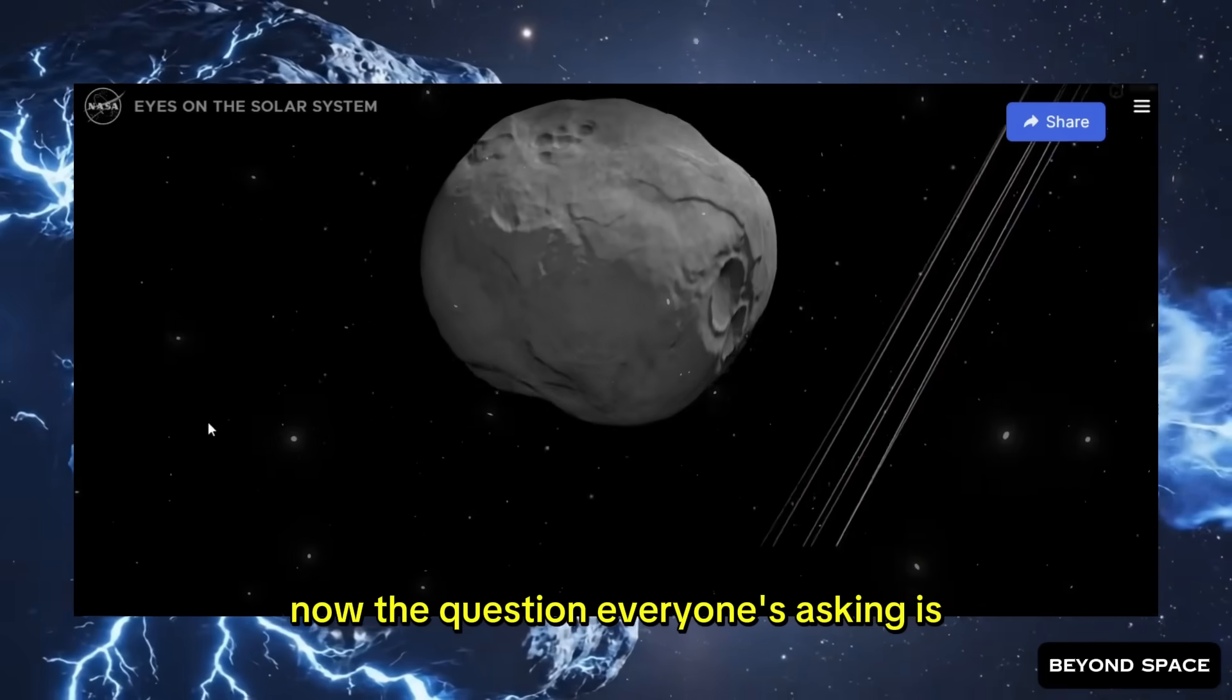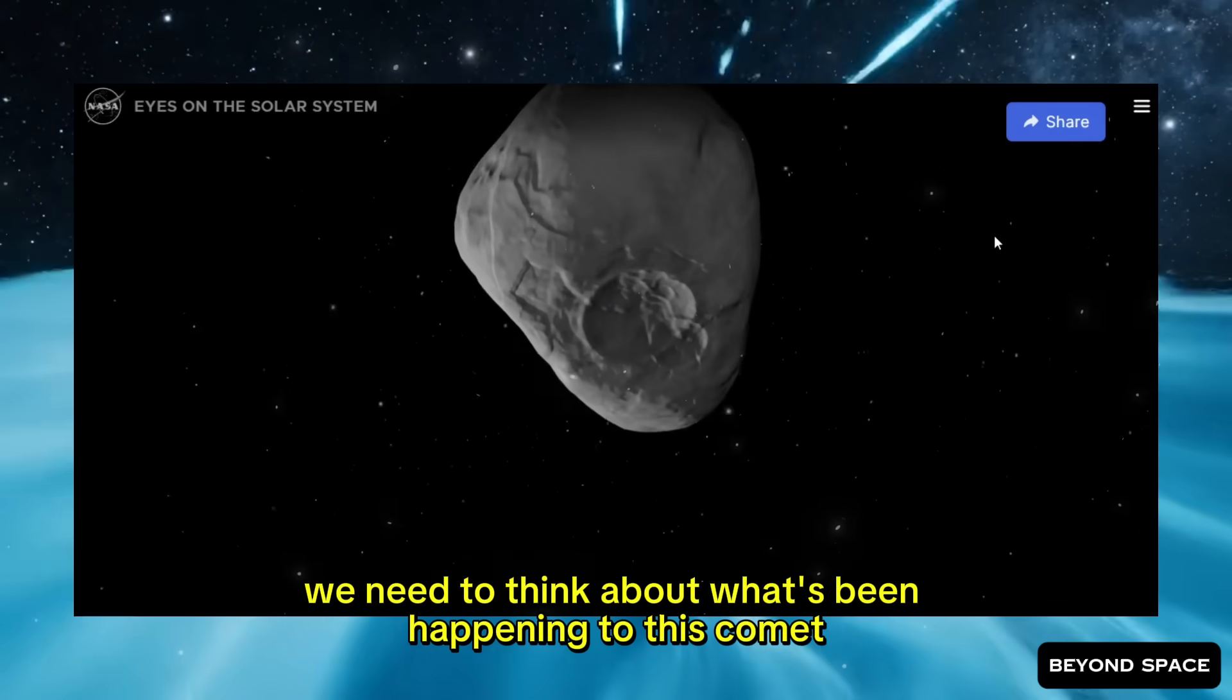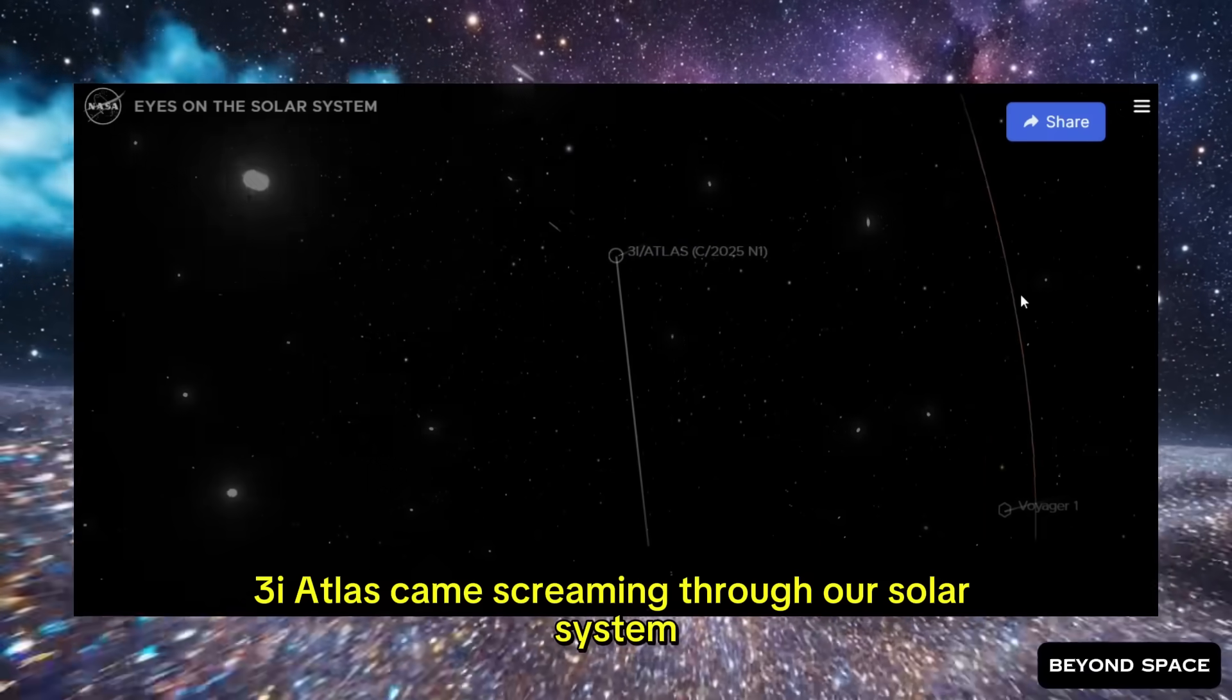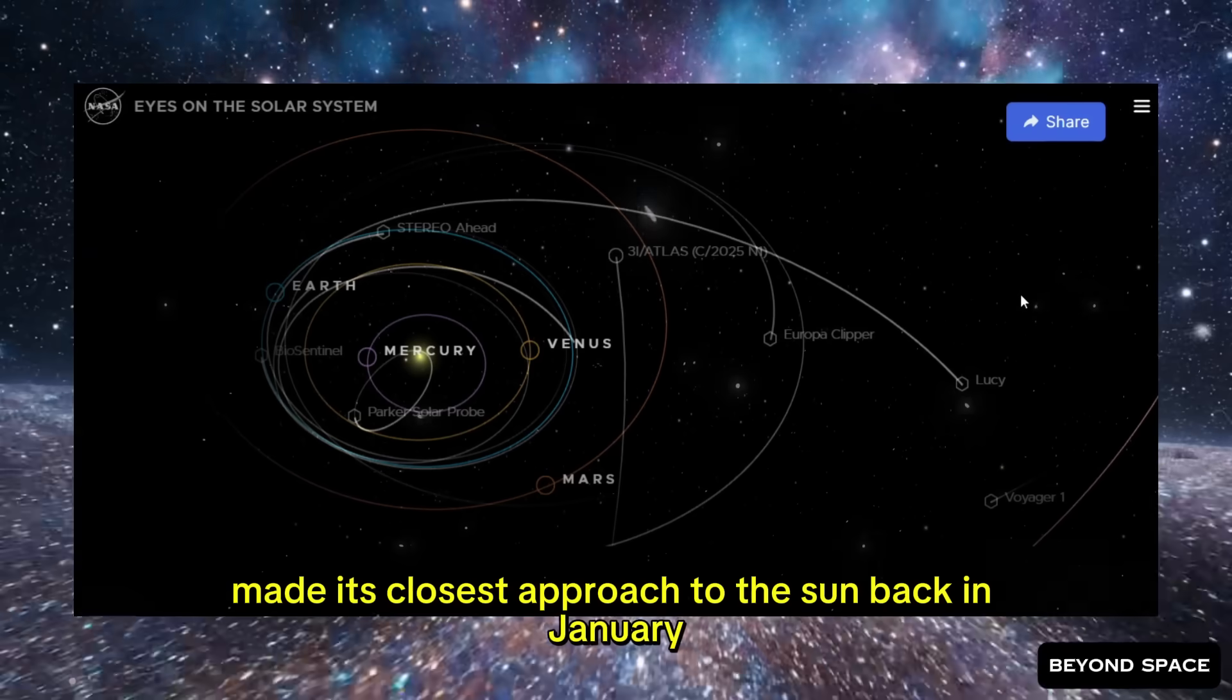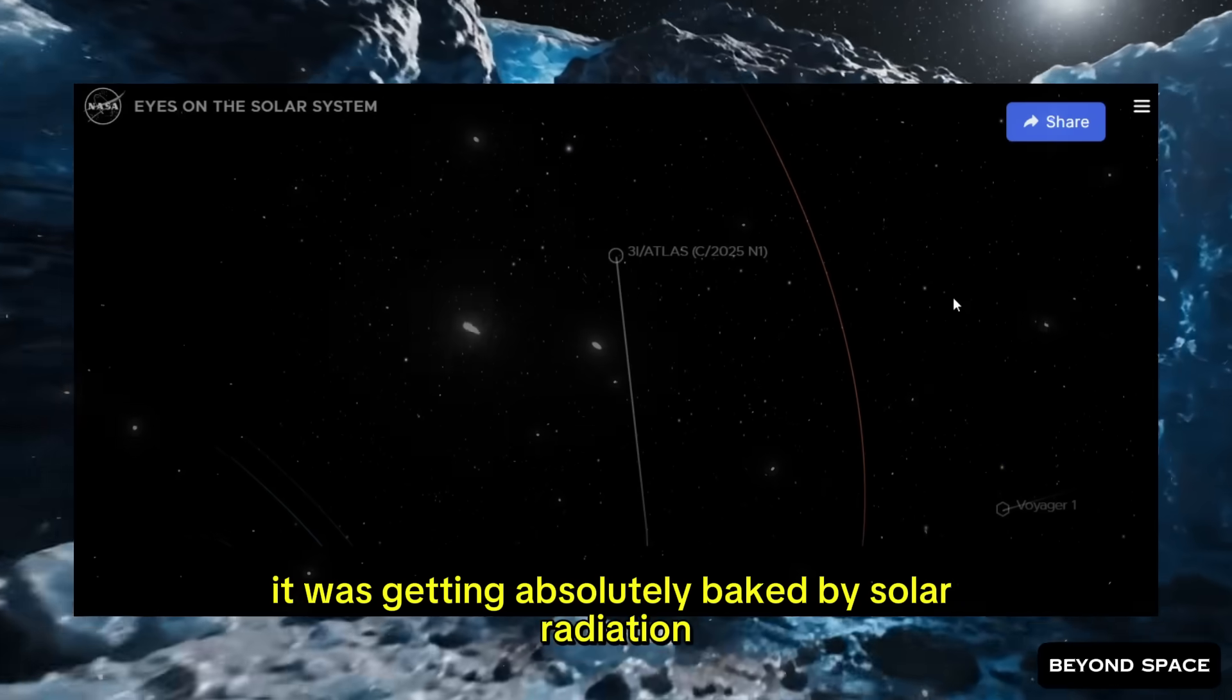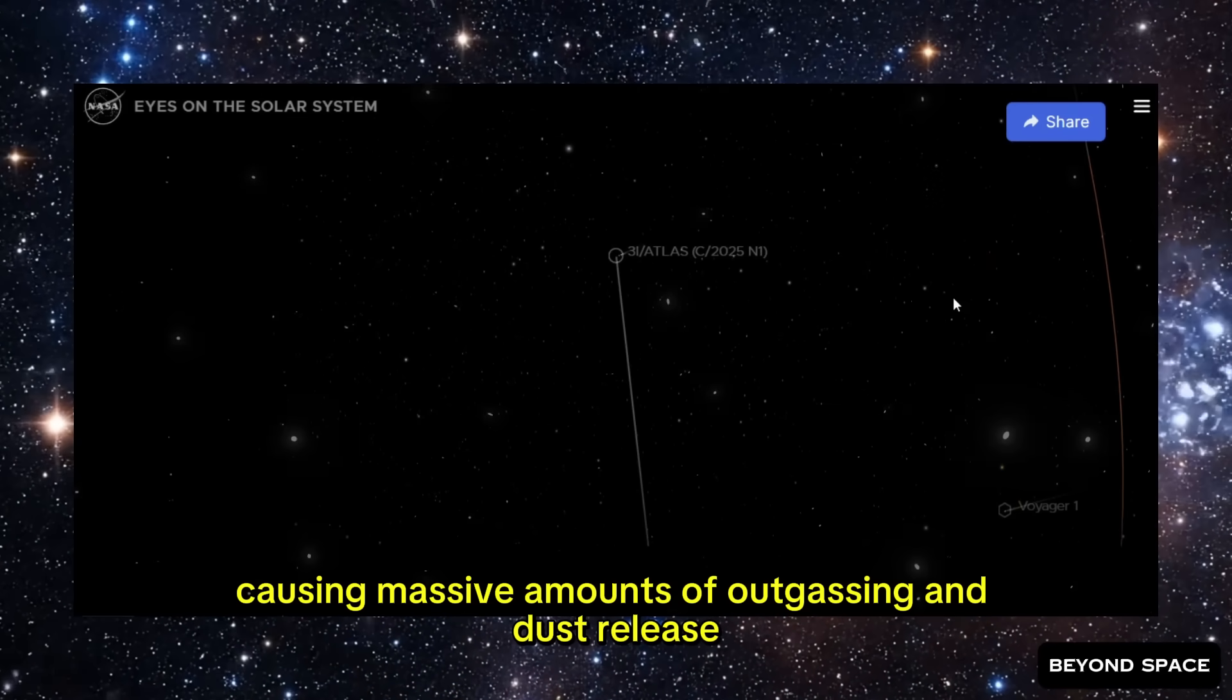Now, the question everyone's asking is, what does this actually mean? What's going on inside this thing? To understand that, we need to think about what's been happening to this comet over the last few weeks and months. 3i Atlas came screaming through our solar system, made its closest approach to the sun back in January, and has been heading outbound ever since. When it was near the sun, it was getting absolutely baked by solar radiation. All that energy was driving into the surface, heating up the ices, causing massive amounts of outgassing and dust release.